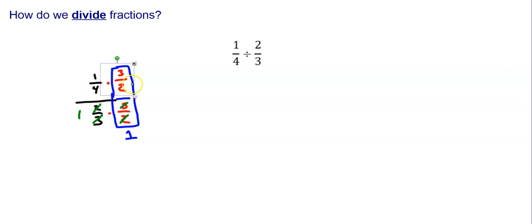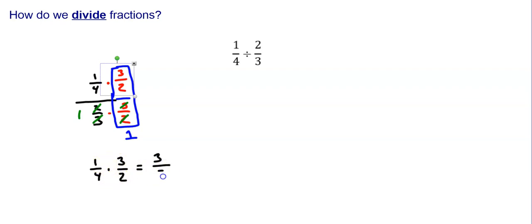So now look at what I have in the numerator. Now that I got rid of the denominator, I have one-fourth times three-halves, and now it's just a multiplication problem. We multiply by going across: one times three is three, four times two is eight. So one-fourth divided by two-thirds is simply three-eighths.